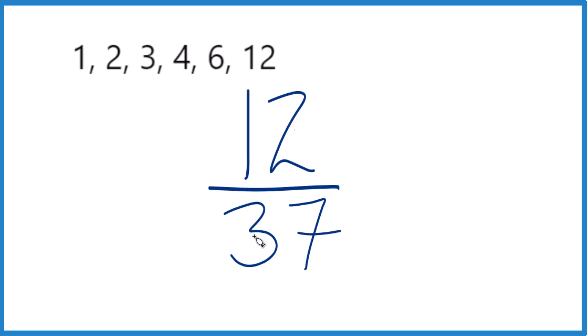For 37, though, the only thing that equals 37 is 1 times 37. That's it.